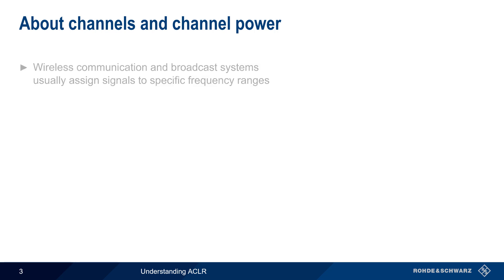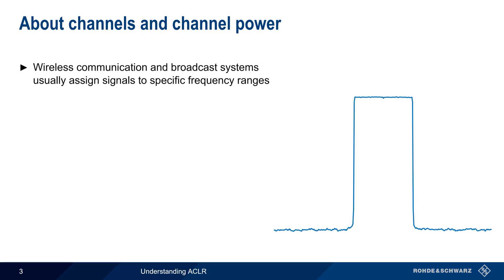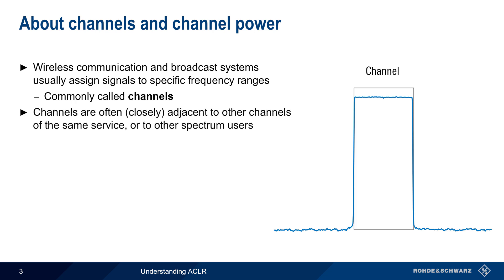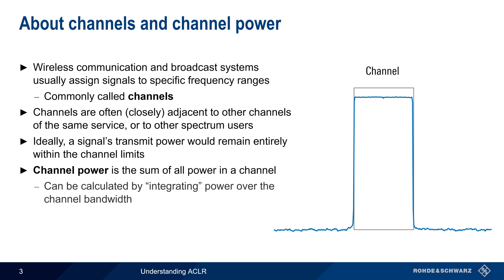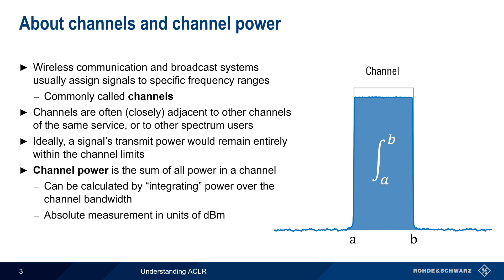Most modern wireless communications technologies, as well as most broadcast systems, produce signals that are assigned to specific frequency ranges commonly referred to as channels. These channels are often adjacent in frequency to other channels of the same service or to other spectrum users. In the ideal case, a transmitted signal's power would remain entirely within the assigned channel or frequency limits. We can define channel power as the sum of all power present within a given channel. This is typically determined by integrating the signal power over the channel bandwidth, with the result being an absolute power measured in units of dBm.